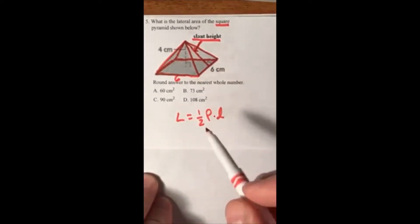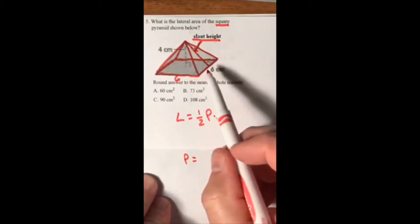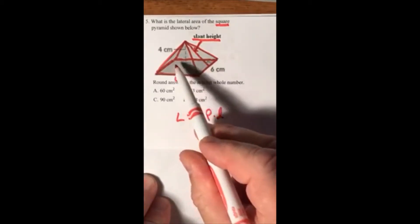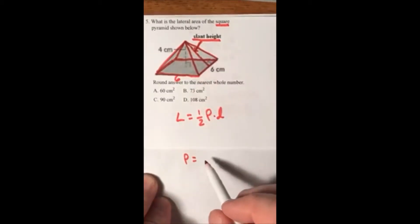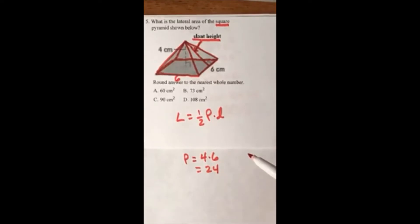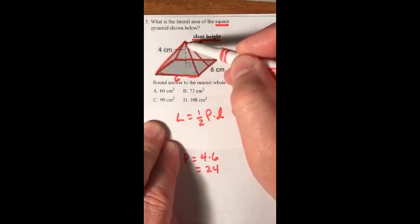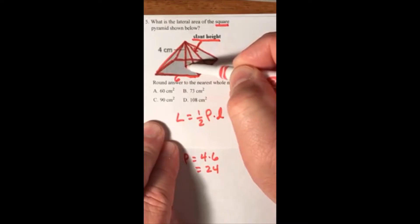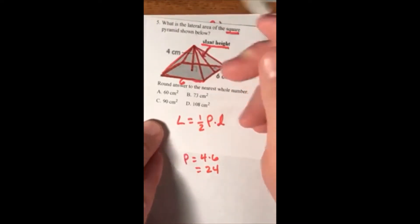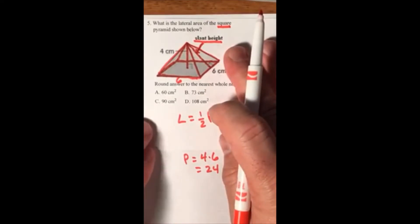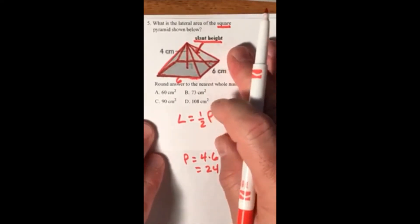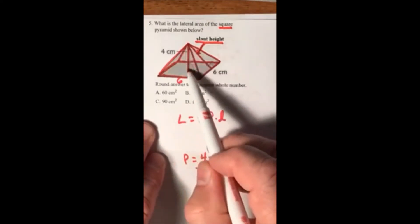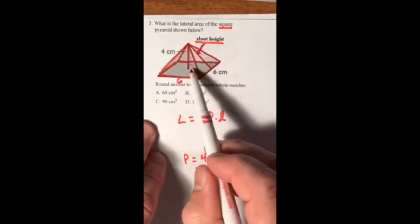We know that we have a square base, so the perimeter is 6 plus 6 plus 6 plus 6, which is 4 times 6, that's 24. The slant height we don't know. This piece right here is the vertical height. You need that for volume. If you don't have the vertical height for volume, you have to find it, but we already know the vertical height is 4.